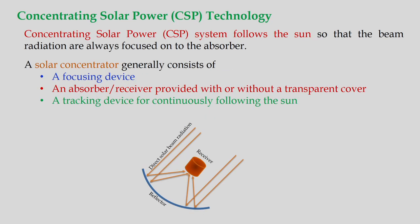This concentrating solar power technology follows the sun so that beam radiation is always focused on the absorber. A solar concentrator generally consists of a reflector and a receiver. Solar radiation comes and strikes on this reflector and reflects to this absorber. Heat transfer fluid flows through this receiver, and then that can be collected in a collection unit and applied as per the applications.